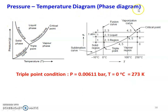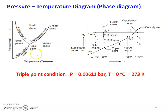The pressure-temperature diagram, also known as the phase diagram: pressure is on the y-axis and temperature is on the x-axis. This is the fusion curve, this is the vaporization curve, and this is the sublimation curve. The area between the fusion curve and sublimation curve is the solid phase — ice. The area between the fusion curve and vaporization curve is the liquid phase. The area between the vaporization curve and sublimation curve is the vapor phase. The triple point condition is pressure equal to 0.0611 bar and temperature equal to 273 K (0°C), where all three phases — solid, liquid, and vapor — coexist.